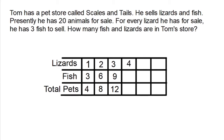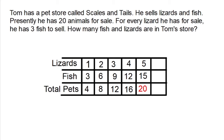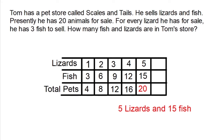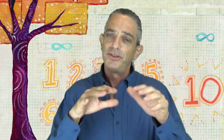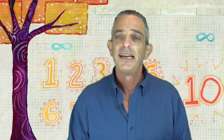With three lizards, he's going to have nine fish, and that would mean he would have 12 pets for sale. We have not yet solved our problem, so let's continue. With four lizards for sale, that would give us a total of 16 pets. Still not enough. If he has five lizards, that would mean he would have 15 fish, and that would mean he would also have 20 total animals for sale. The problem says he has 20 animals for sale, so our table is complete. Tom has five lizards and 15 fish for sale. You see how we organized that data into a table and then used it to solve the problem.